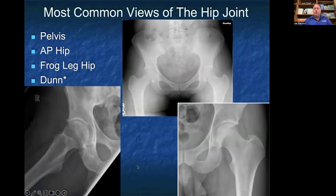The three most common views of the hip joint are typically a pelvis view, which you see here in the middle top, an AP of the hip, which you see in the bottom right, and a frog leg view, which you see in the bottom left. There is also the Dunn view, which we'll be discussing as well.